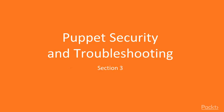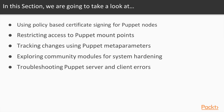In this section, we will learn about Puppet security and troubleshooting. We will first look at how to perform certificate signing for Puppet nodes by creating policies. We will then move on to creating non-default file server mount points for use in Puppet and restricting access to them based on node names. Next, we will learn about tracking changes using Puppet meta-parameters. We will then explore some security-related community modules which can be used for system hardening. Finally, we will learn about troubleshooting server and client errors in Puppet.